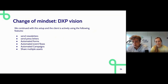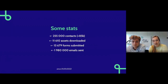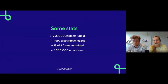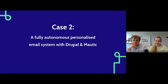This open setup works really well. The client actively uses the platform every day to send newsletters and press letters, uses multiple automated forms for assets and events, shares assets between departments, and has many automated campaigns running. After one and a half years, they have more than 250,000 contacts in Mautic, with an increase of 85,000 contacts in the last six months. They've sent almost two million emails, more than 11,000 assets were downloaded, and almost 14,000 forms have been submitted.